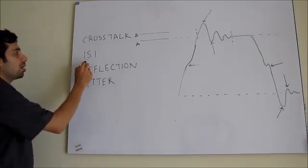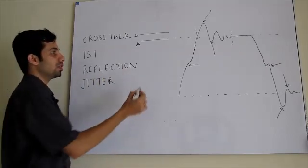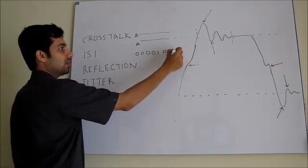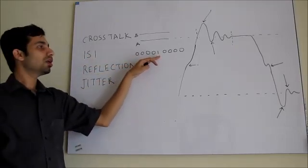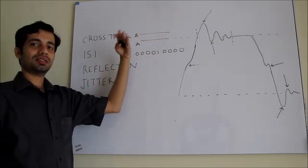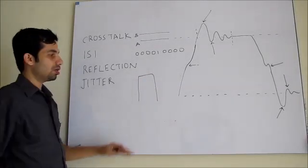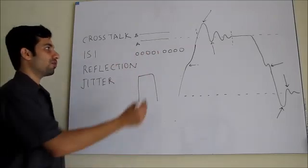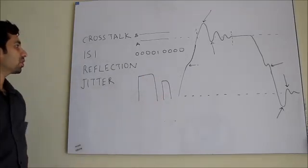This phenomenon where the quality of the signal gets distorted is called crosstalk. The next term is ISI, or inter-symbol interference. When there is a stream of data—for example, four zeros, a single one, and then four zeros again—due to inter-symbol interference, the amplitude of bit one will not be as good as expected. Due to the surrounding zeros, the actual amplitude could be reduced, which can result in bad data.